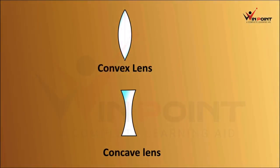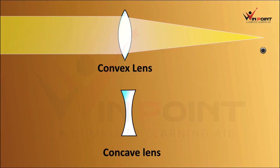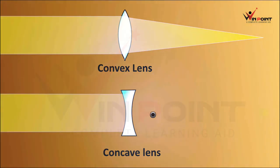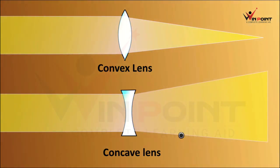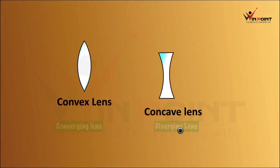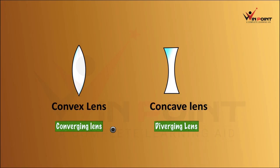Now we can discuss about the properties of convex and concave lens. When light is traveling through the convex lens, it will concentrate the light into a particular point — it is a converging lens. When sunlight is passing through a concave lens, it will diverge the light, so it is known as a diverging lens. Convex lens is a converging lens and concave lens is a diverging lens.